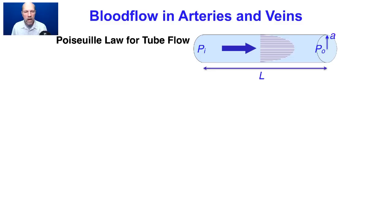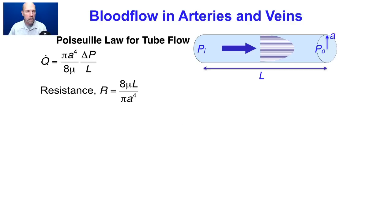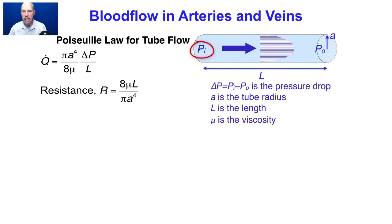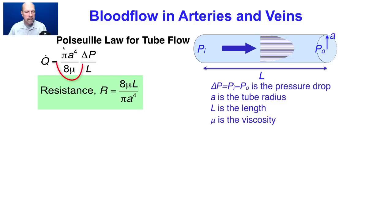We will study blood flow in arteries and veins, including deriving Poiseuille's law for tube flow, in which the flow rate Q-dot equals pi A to the fourth over 8 mu times delta P over L, where delta P is the difference between inlet pressure P_I and outlet pressure P_O, A is the radius, L is the length, and mu is the viscosity. The resistance to flow is 8 mu L over pi A to the fourth. Notice that as the vessel diameter decreases, resistance increases as the fourth power of diameter.